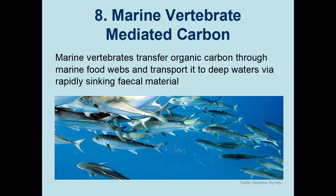Marine vertebrate-mediated carbon is essentially about fish feces. Marine vertebrates feed on lower trophic levels such as plankton, zooplankton, and smaller fish, and through digestion repackage that material via organic carbon into rapidly sinking fecal material. Researchers have found that the fecal matter of many marine vertebrates contains high amounts of carbon and sinks at rates exponentially greater than carbon associated with plankton and zooplankton. Additionally, fish fecal material has low rates of dissolution, meaning it can stay compacted together rather than being broken up and dissolved, giving it a better chance to reach the ocean floor.